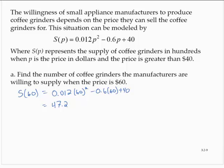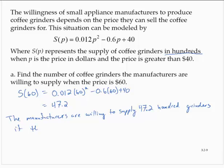So remember that S of p is a number in hundreds. So the manufacturers are willing to supply 4,720 grinders if the price is $60.